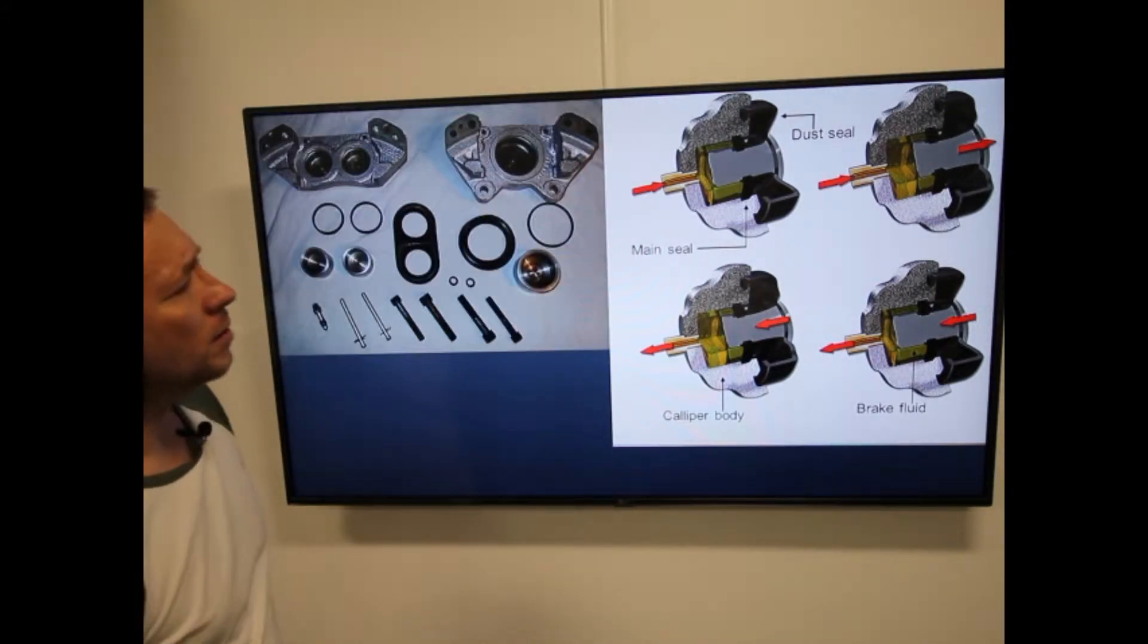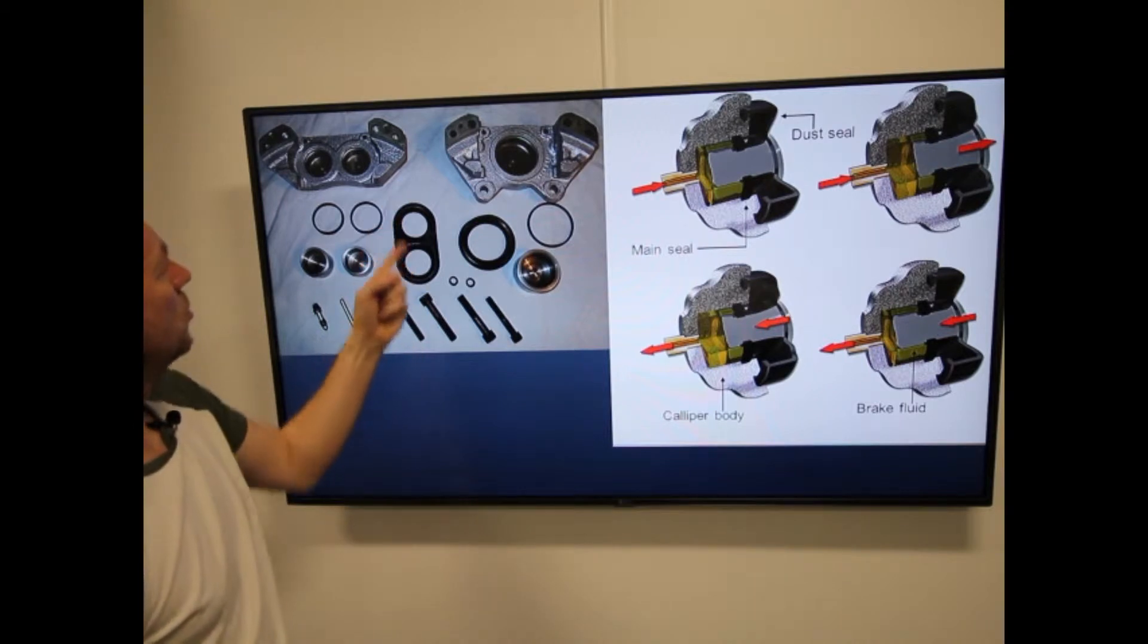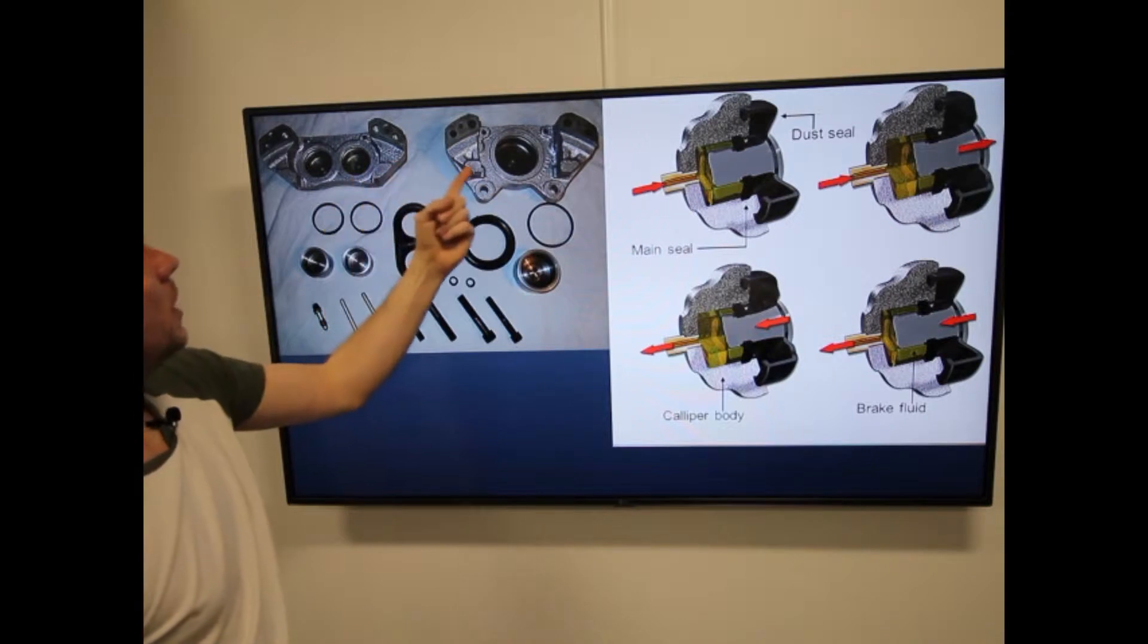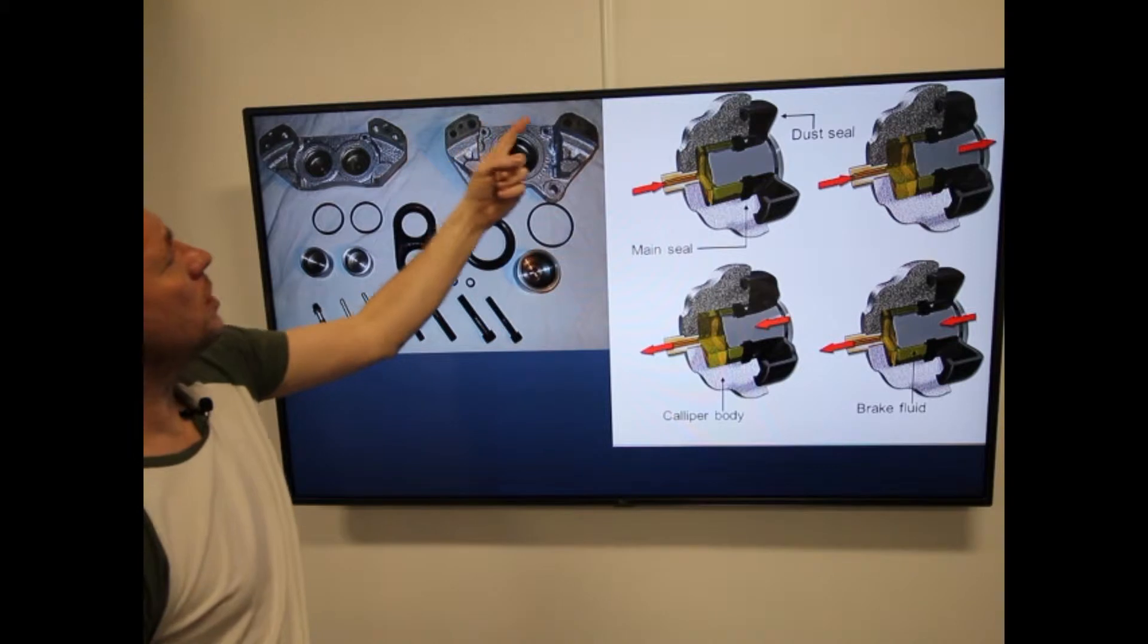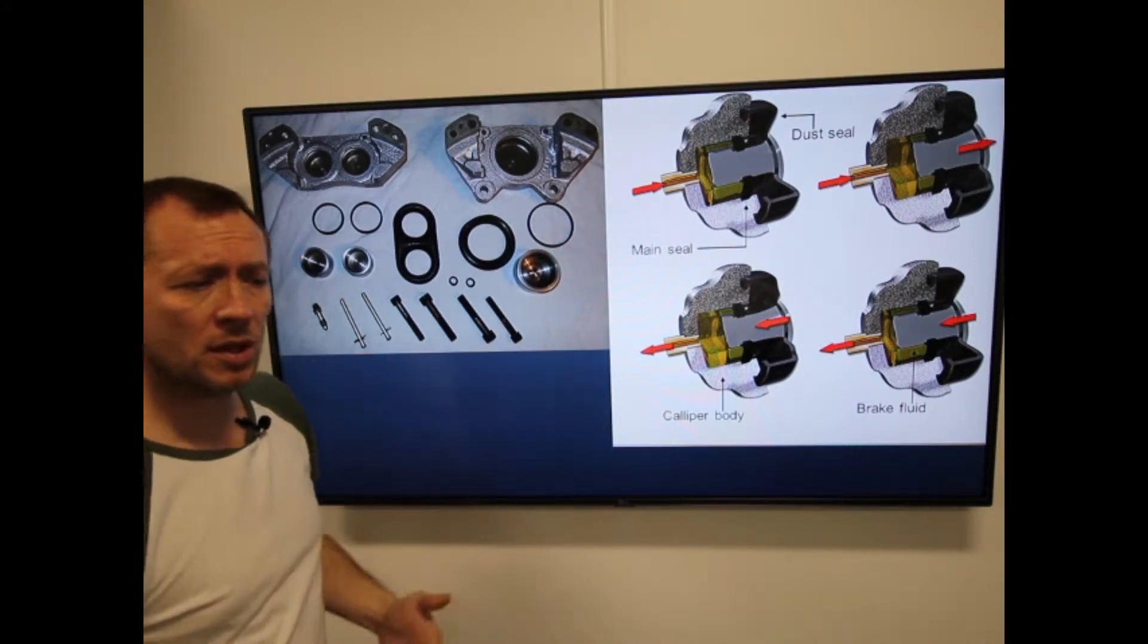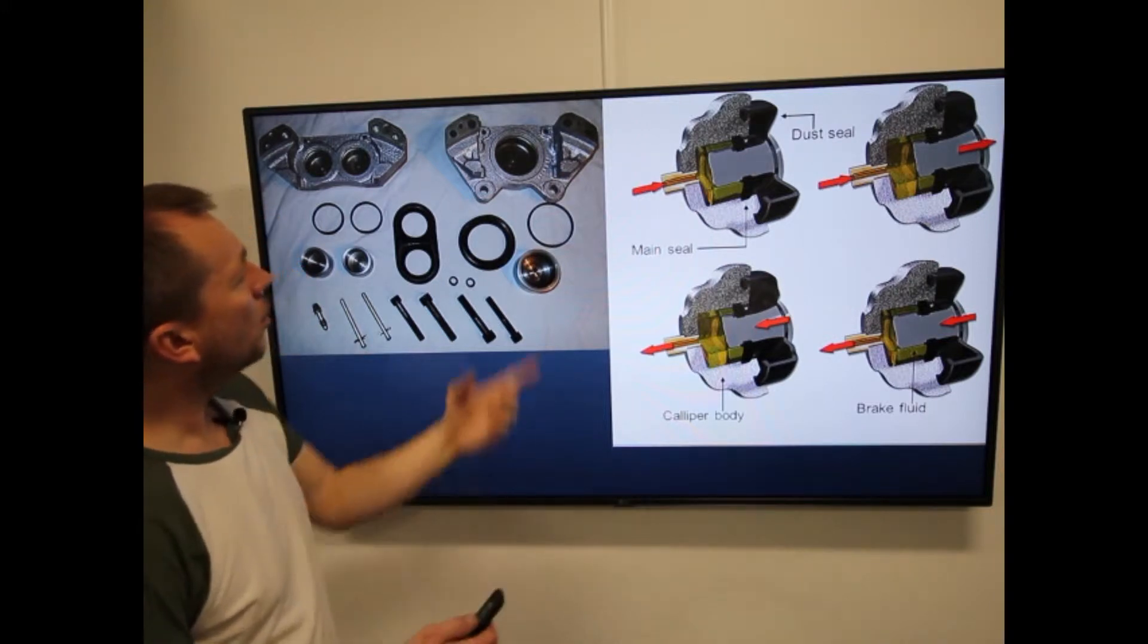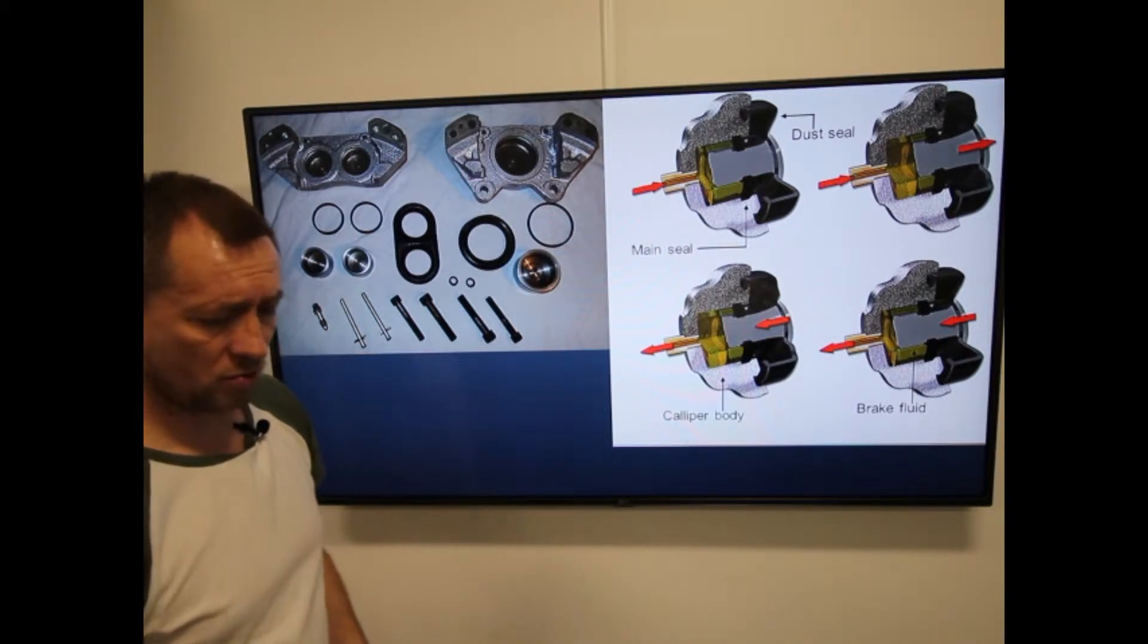If we were to strip this component down, you'll see many of the same components. We have fluid seals, we have dust boots, we have one, two, three pistons. We've split the main caliper body in half and what the big difference here is the fact that it's got channels that allows brake fluid to pass from one half to the other. The operation of it is no different. Fluid pressure acts on the back of the pistons. The pistons move forward. When the driver releases the brake pedal, those fluid seals snap back into position and pull the piston back into its natural resting position.